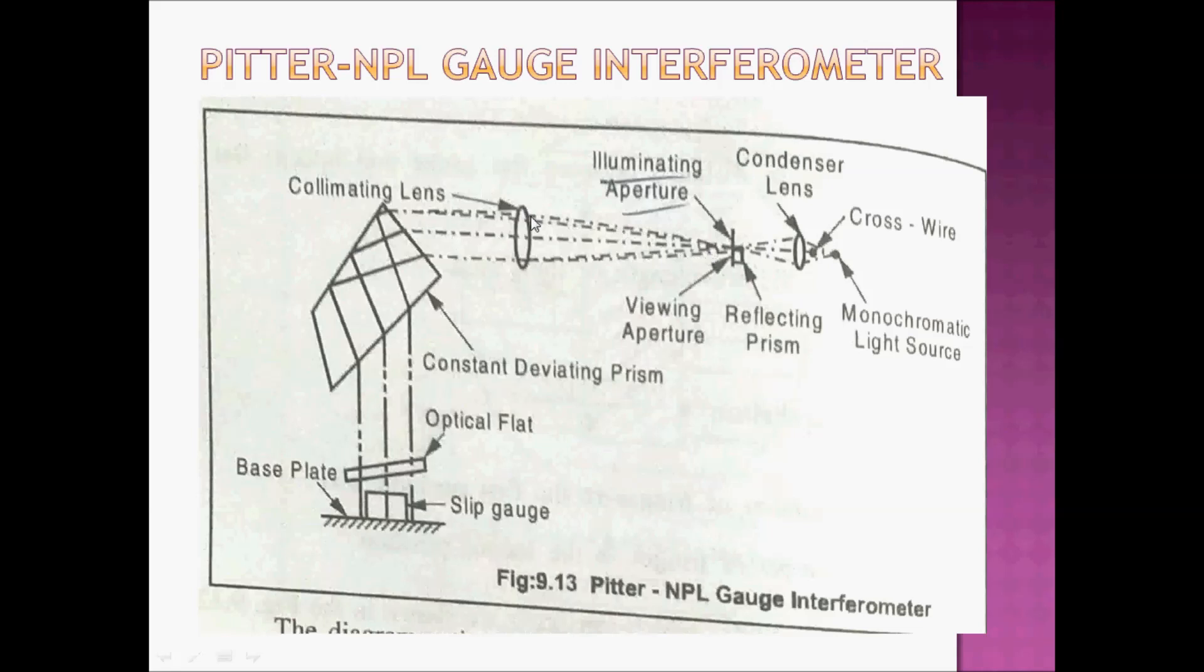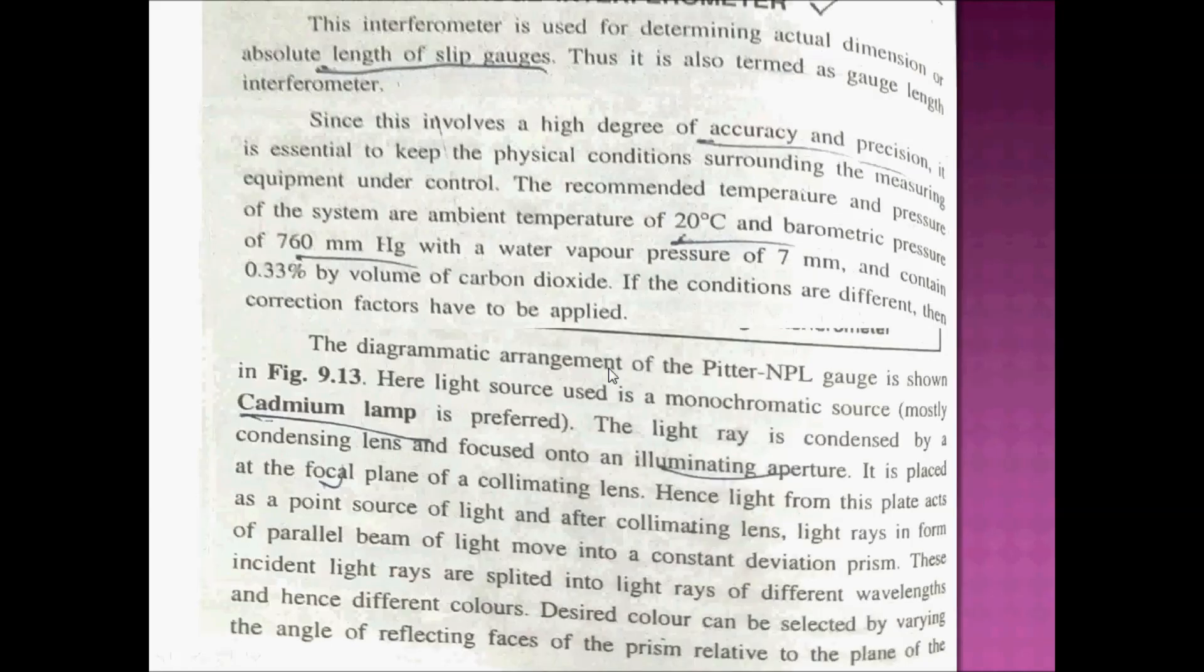The system includes a constant deviation prism. The constant deviation prism separates different wavelengths and different color rays. Components include optical flat, work piece, slip gauge, then reflection occurs, producing a fringe pattern output for the procedure.